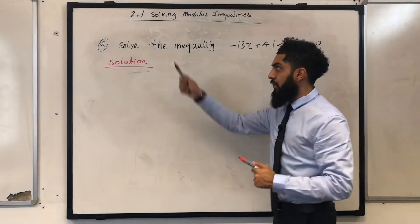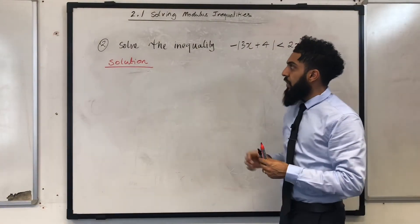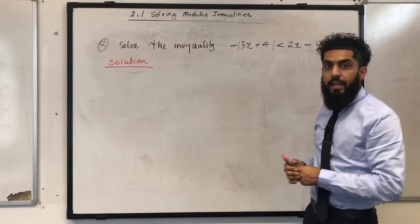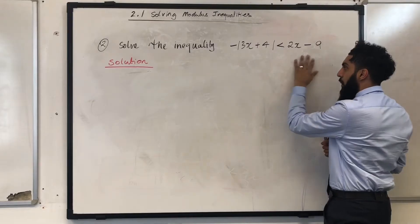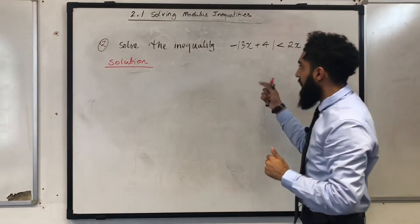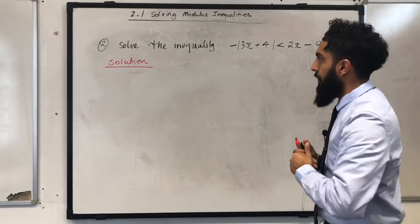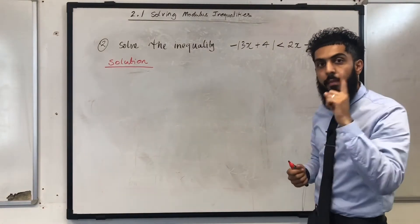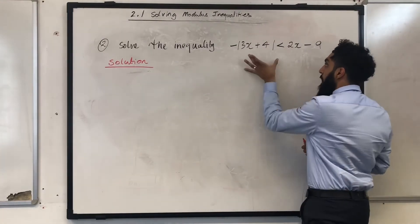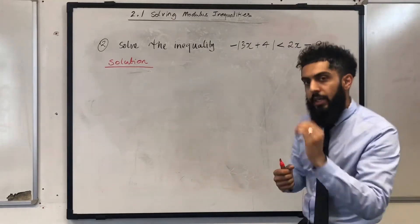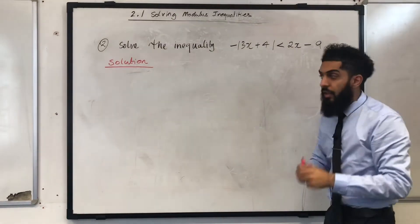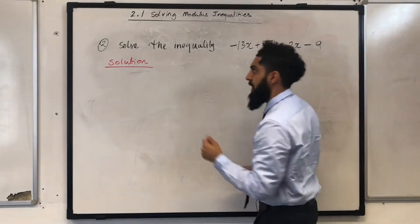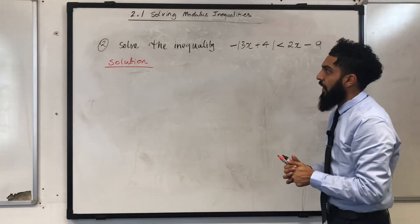Now it's time to move on to question number 2. Question 2 says: solve the inequality — negative modulus of 3x plus 4 is less than 2x minus 9. As a teacher, I can see a lot of students making mistakes on this particular question because of the negative in front of the modulus. Some questions I call crispy, others I call juicy — this one is a very juicy question. Let's solve it.